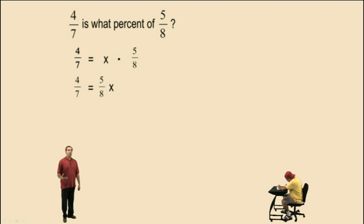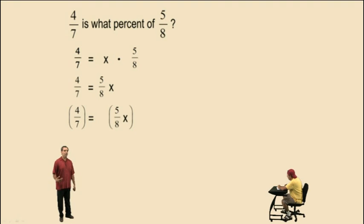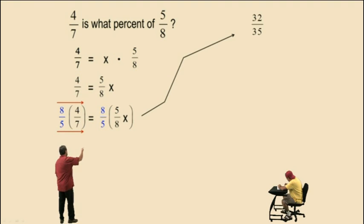And to solve this for x, we are going to use our reciprocal method. Meaning, notice how we have 5 eighths x. Well, we can divide both sides by 5 eighths. But dividing by 5 eighths means you're multiplying by 8 fifths, the reciprocal. So we're going to multiply both sides by 8 fifths, the reciprocal of 5 eighths. And on the left-hand side, we get 32 over 35. Now, notice on the right-hand side, the 8's cancel out, so do the 5's, and we end up with 1x for our answer.